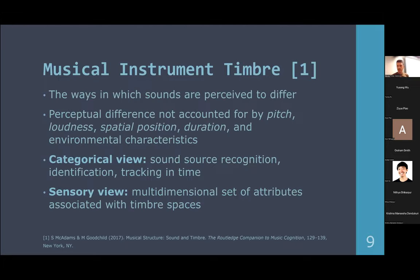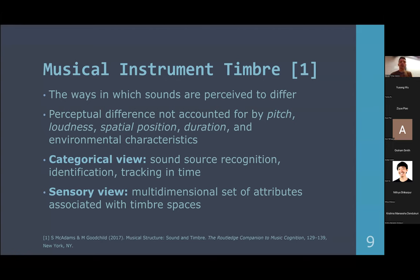To explore those ideas, we need to understand what timbre spaces and musical instruments are. Musical instrument timbre: the word 'timbre' refers to the ways in which sounds are perceived as different — the perceptual difference that cannot be accounted for by pitch, loudness, spatial position, duration, and many other characteristics. Basically, if you're playing the same note, same pitch, same dynamics, in the same room, with the same duration, and you can still perceive that two sounds are different — for example, played by different musical instruments — then timbre is responsible for those differences.